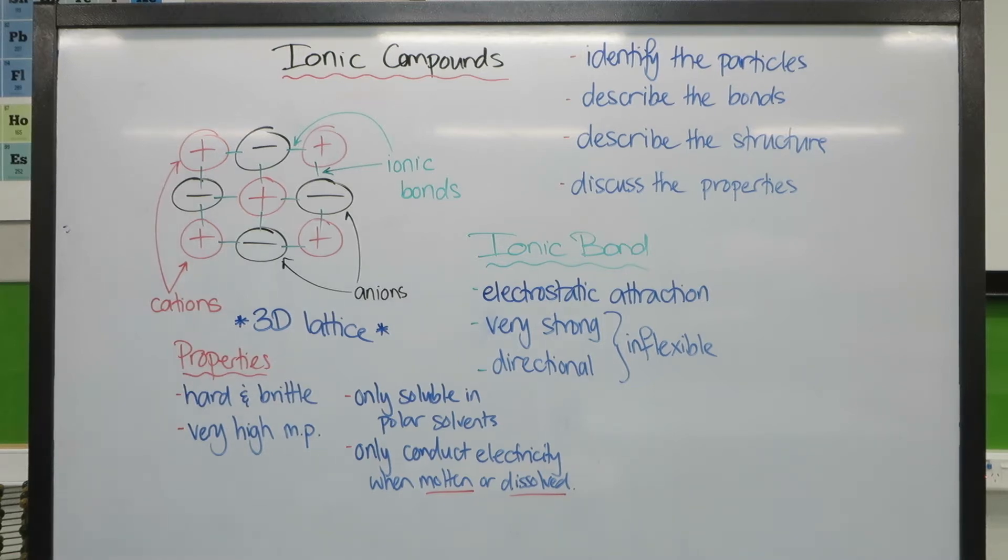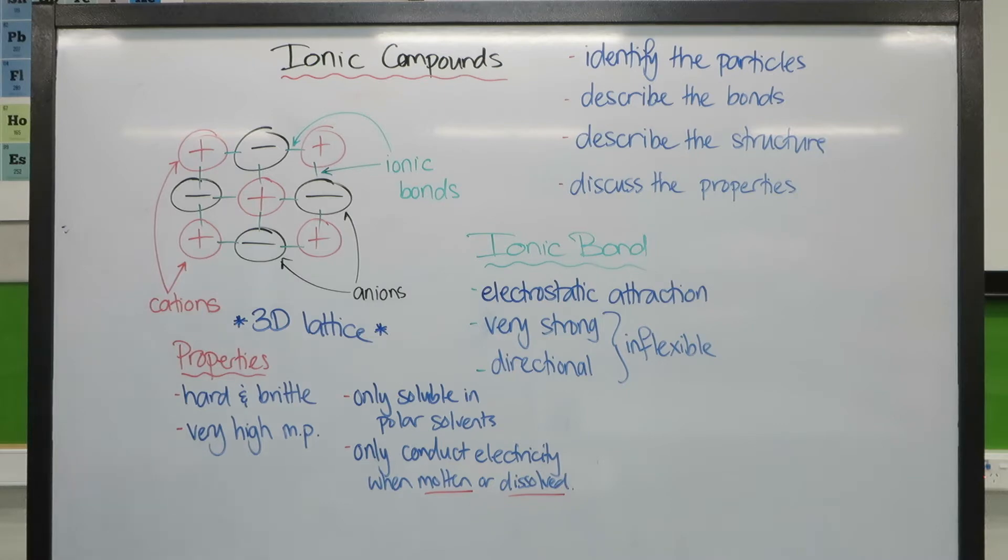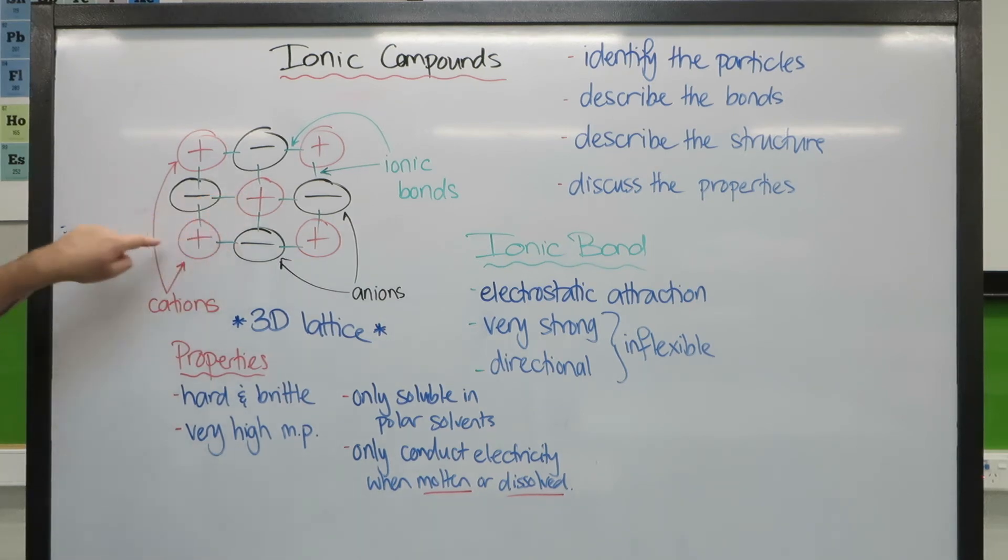In this video we're going to look at ionic compounds, particularly when they're in their solid state. Ionic compounds, as the name suggests, are made up of ions - that is their particles - so positive cations and negative anions, held together by very strong ionic bonds between those.